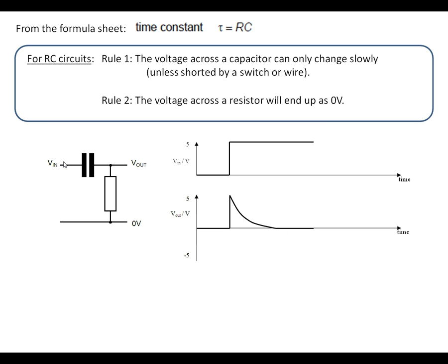If we make V in drop down by 5 volts, V out will also drop down by 5 volts. But because we've got the resistor there, it's going to end up at 0 volts.